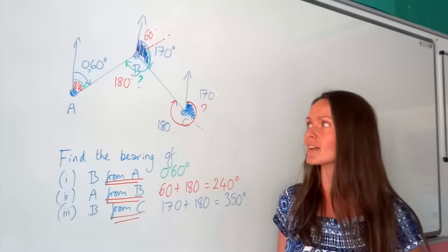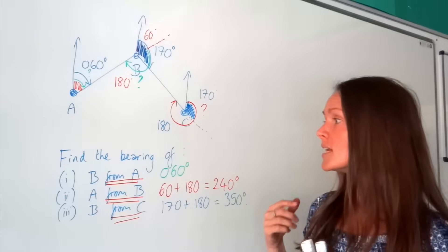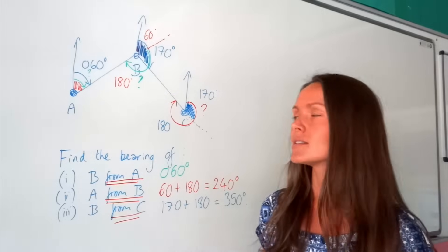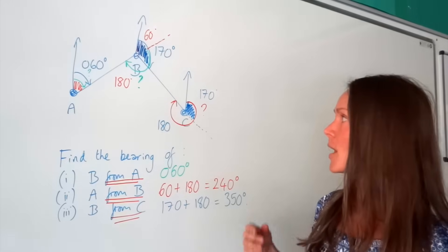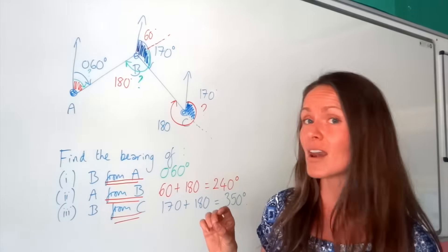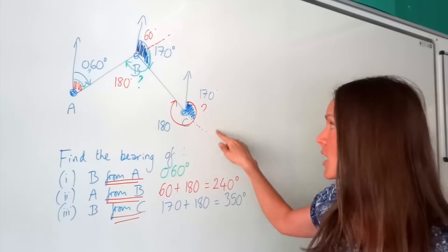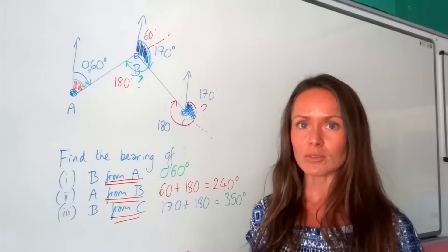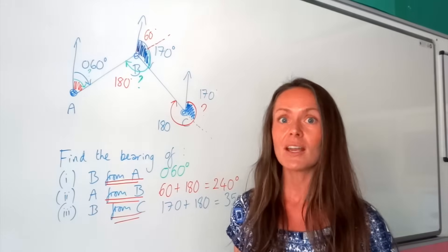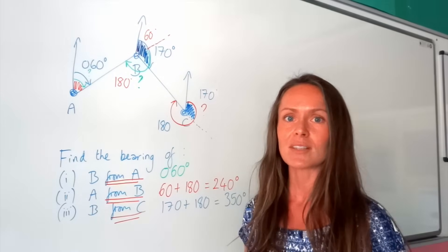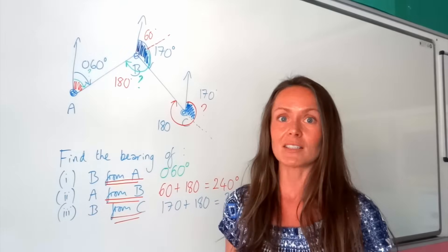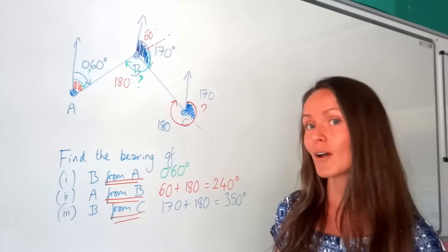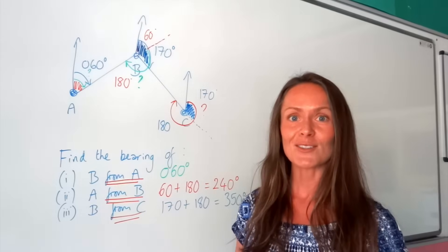Just something to point out: in all the examples in this video, the diagrams are not to scale, so measuring with a protractor would not give those values. Usually the question will say 'not to scale' on the diagram. There are other bearings questions where diagrams are to scale, and that's when you would use a protractor — I'll cover that in another video soon.